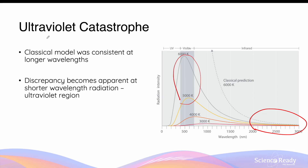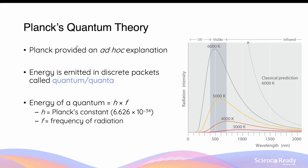In response to the ultraviolet catastrophe, physicist Max Planck provided an ad hoc explanation in his quantum theory. The term ad hoc means the explanation was developed after the relevant experimental results. In the quantum theory, Planck proposed that the energy of blackbody radiation is emitted in discrete packets of energy called a quantum, or plural quanta. The energy of one quantum is given by E = hf, where h is Planck's constant (6.626 × 10⁻³⁴ J·s) and f is the frequency of the radiation.